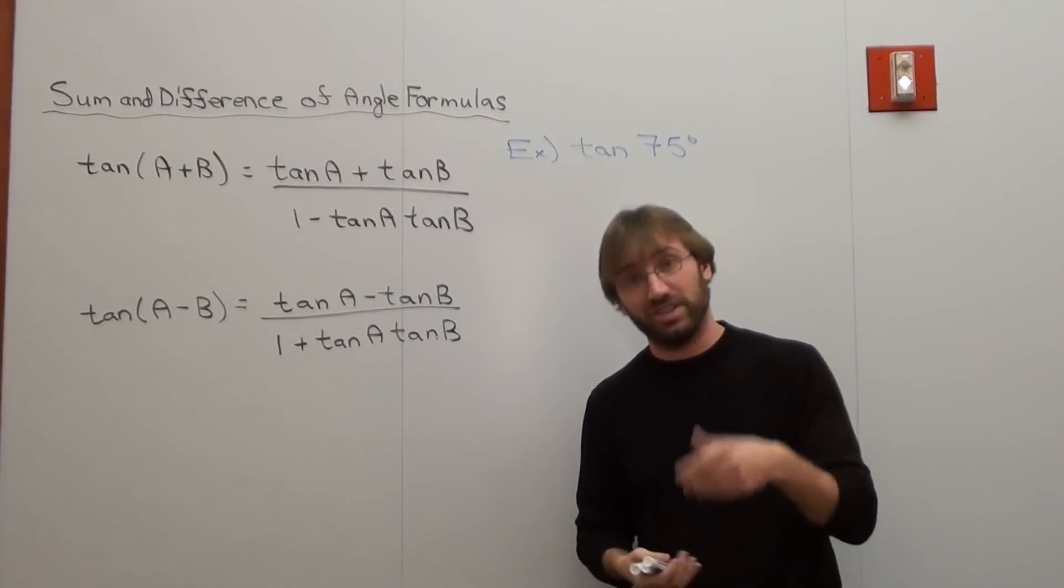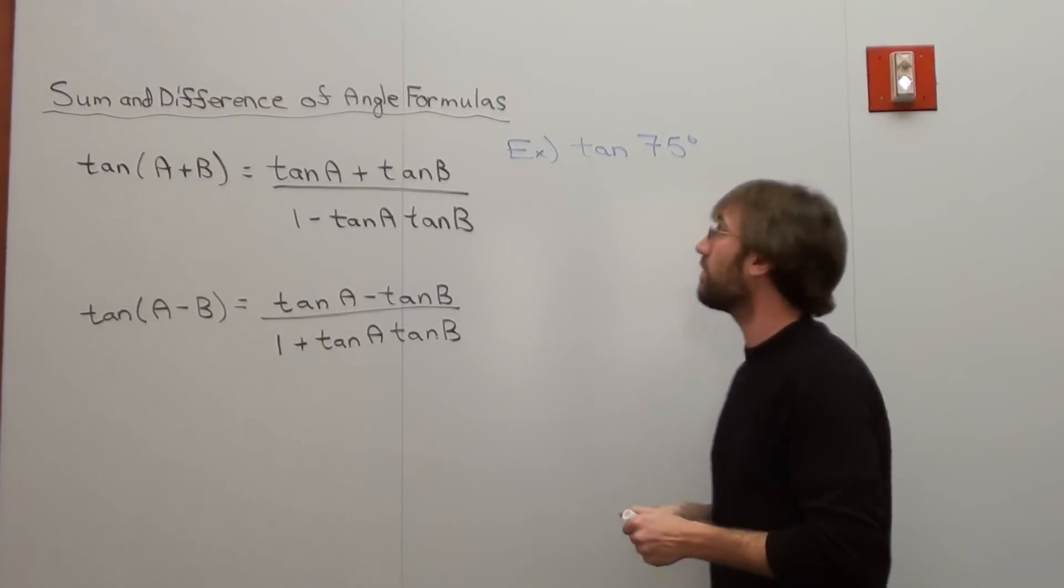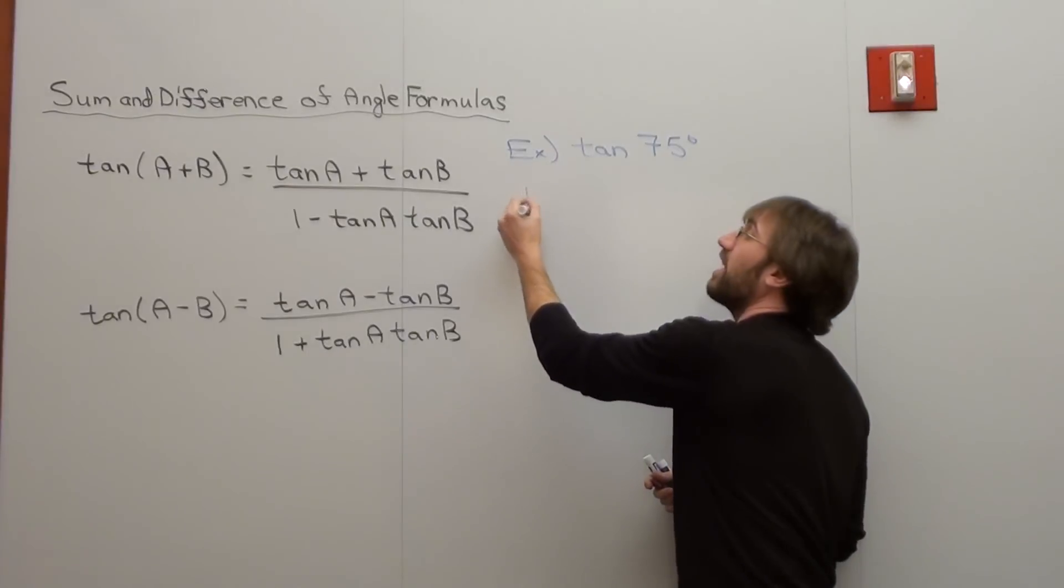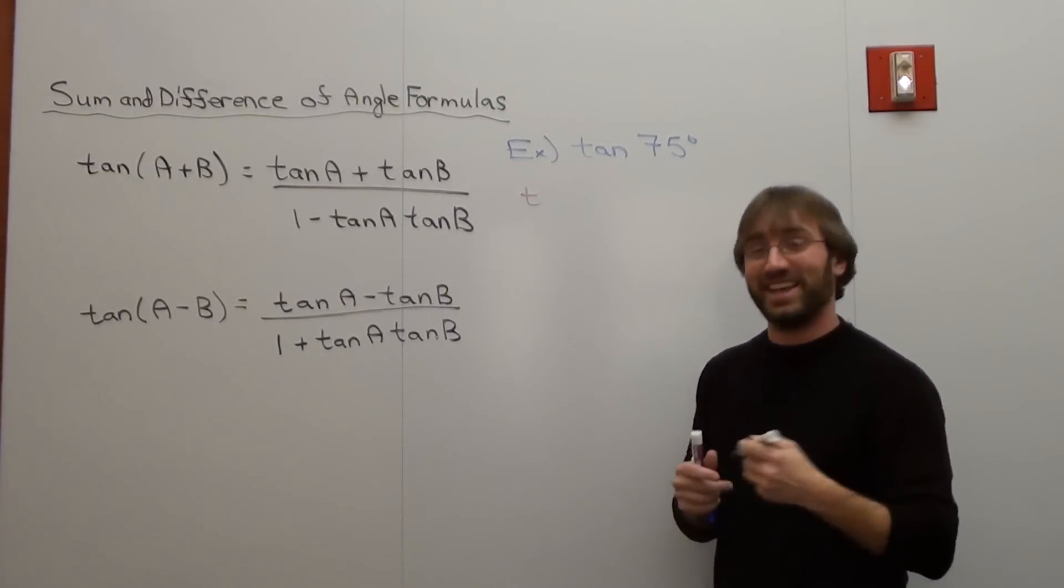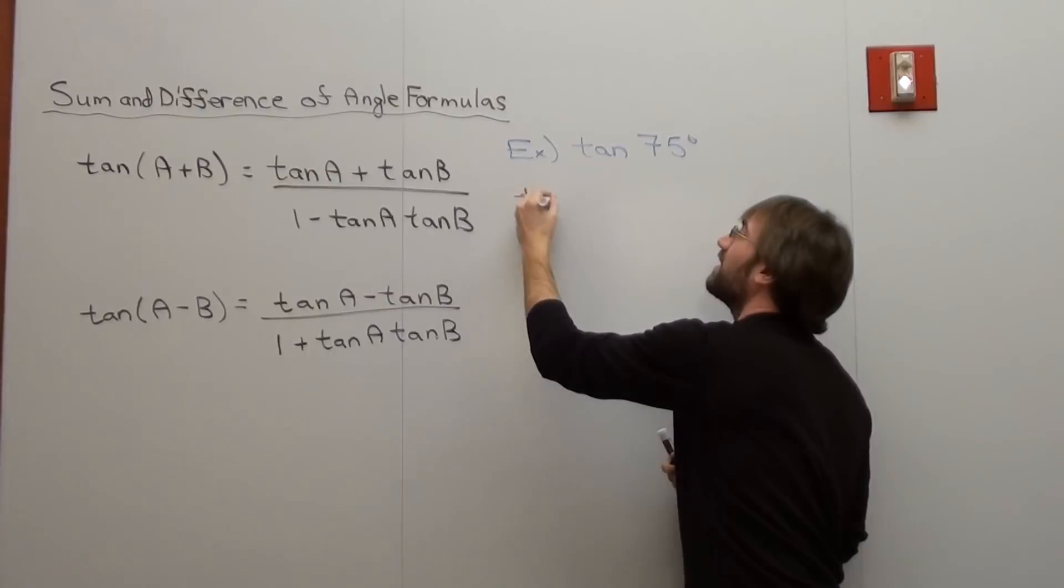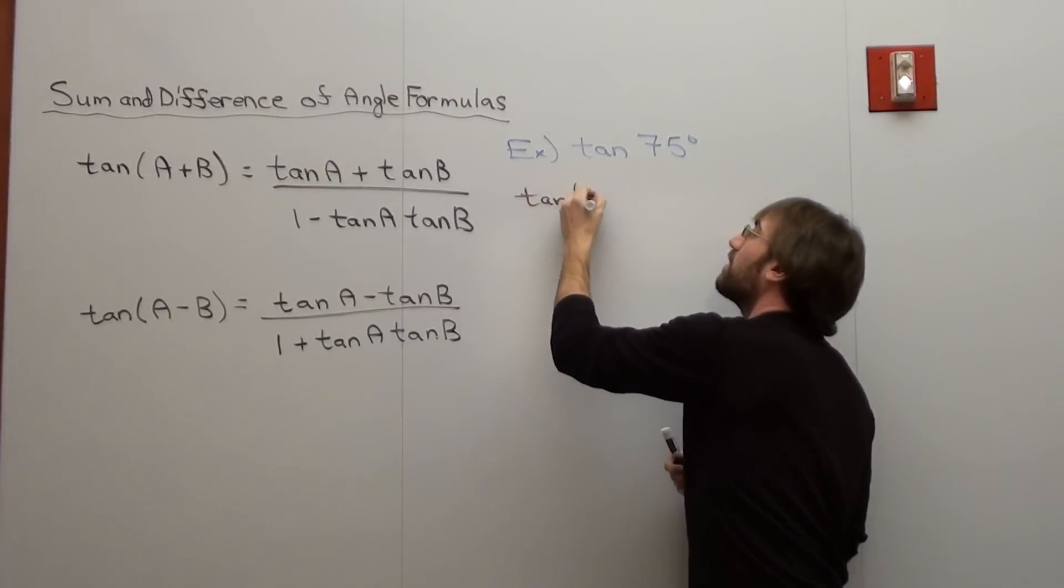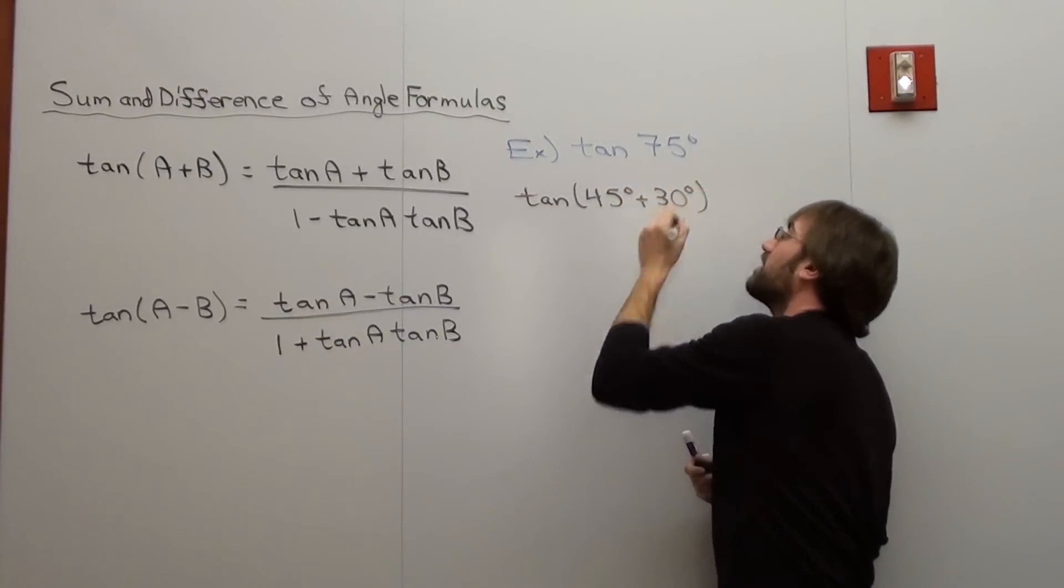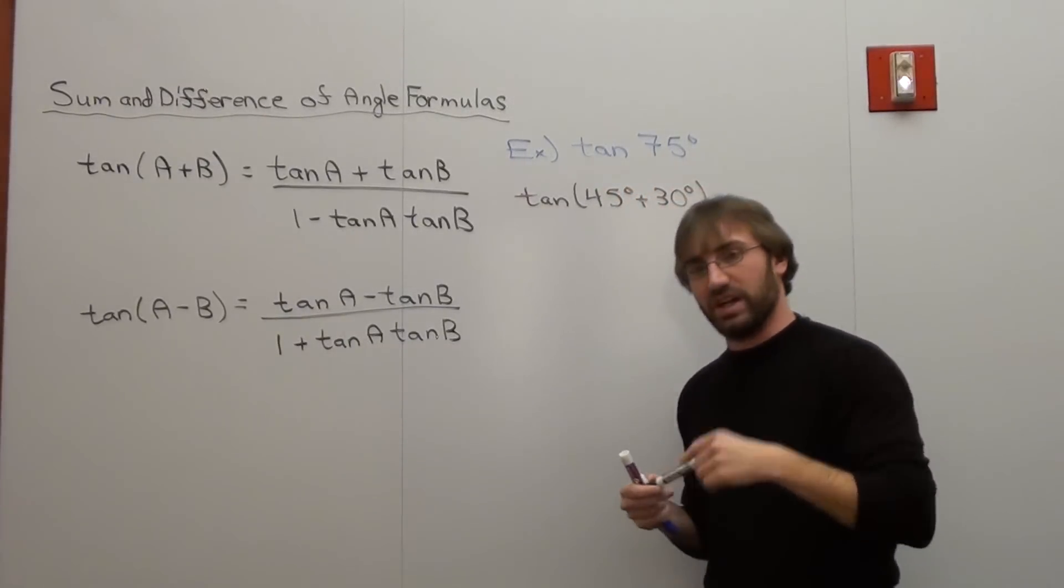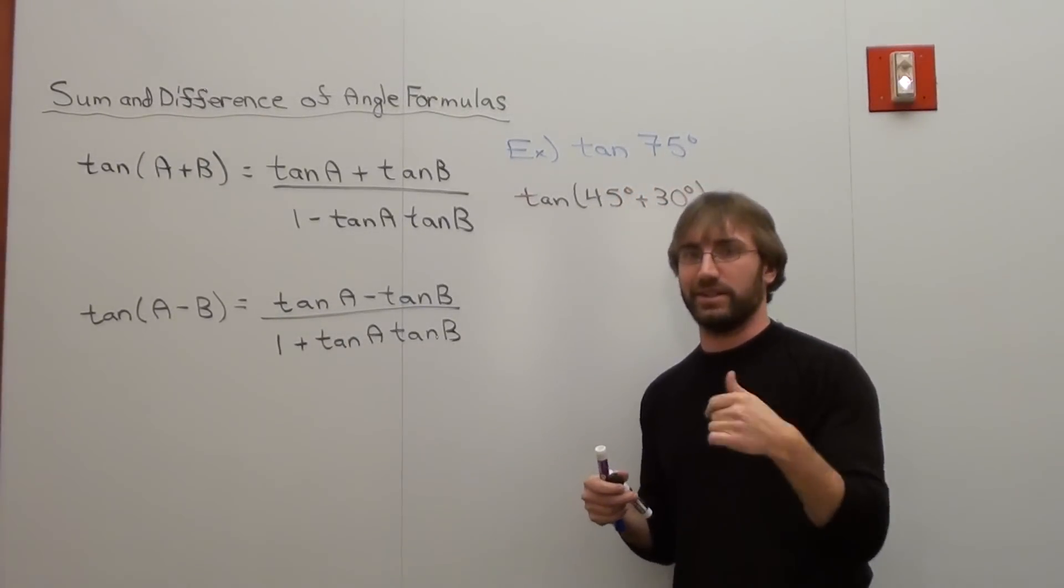Instead, I'm just going to do a concrete example where I have the tangent of 75 degrees. And basically, the tangent of 75 degrees is the tangent of 45 degrees plus 30. It's always a safe bet to use those ones: 30, 45, 60, 0, and 90.